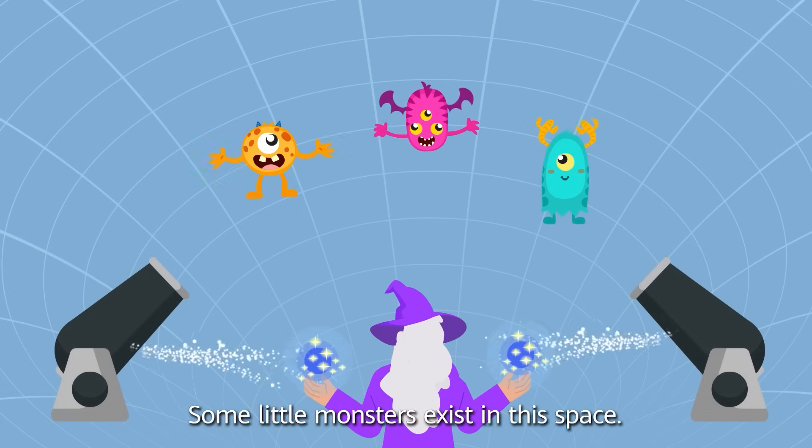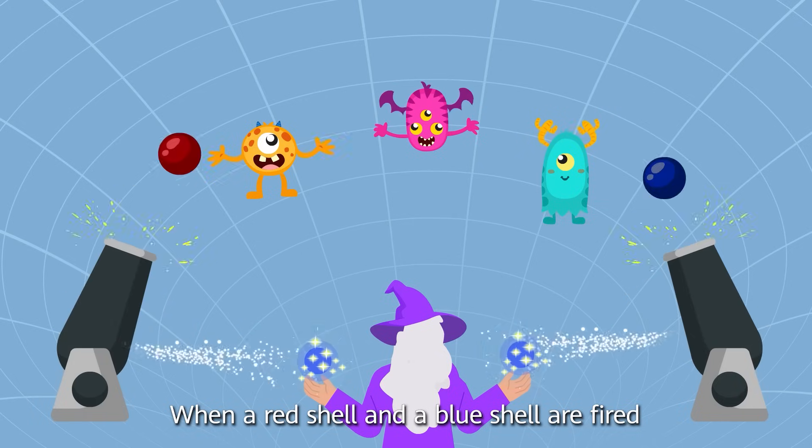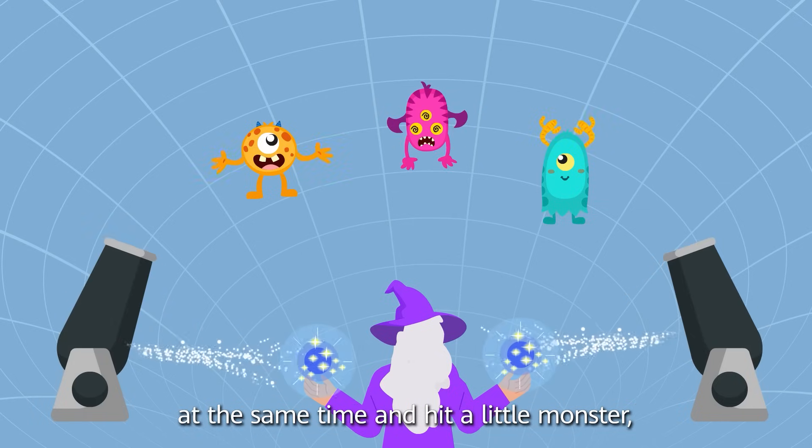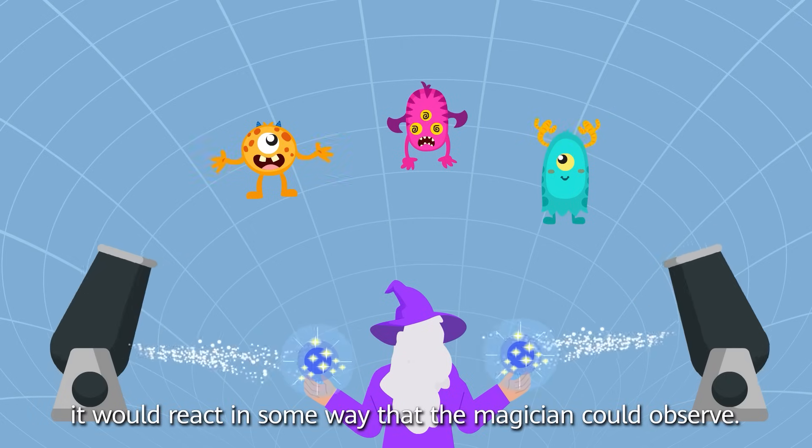Some little monsters exist in this space. When red shells and blue shells are fired at the same time and hit a little monster, it would react in some way that the magician could observe.